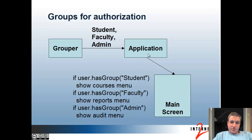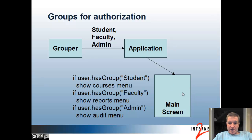If you're using groups, Grouper will store who is a student, faculty, or admin — and this could be loaded from a source of record. The application will get that information of who's in which group, and then logic inside the application would say something like: if the user has the group 'student', show the courses menu; if they're faculty, show the reports menu; or if they're an admin, show the audit menu.